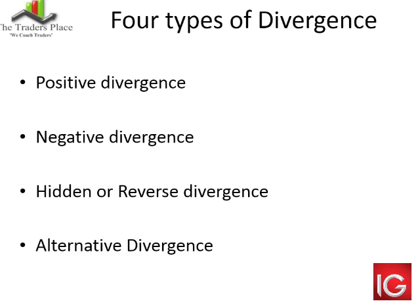There are four types of divergence: positive divergence, negative divergence, hidden or reverse divergence, and I've also thrown in some alternative divergences that are not often looked at.